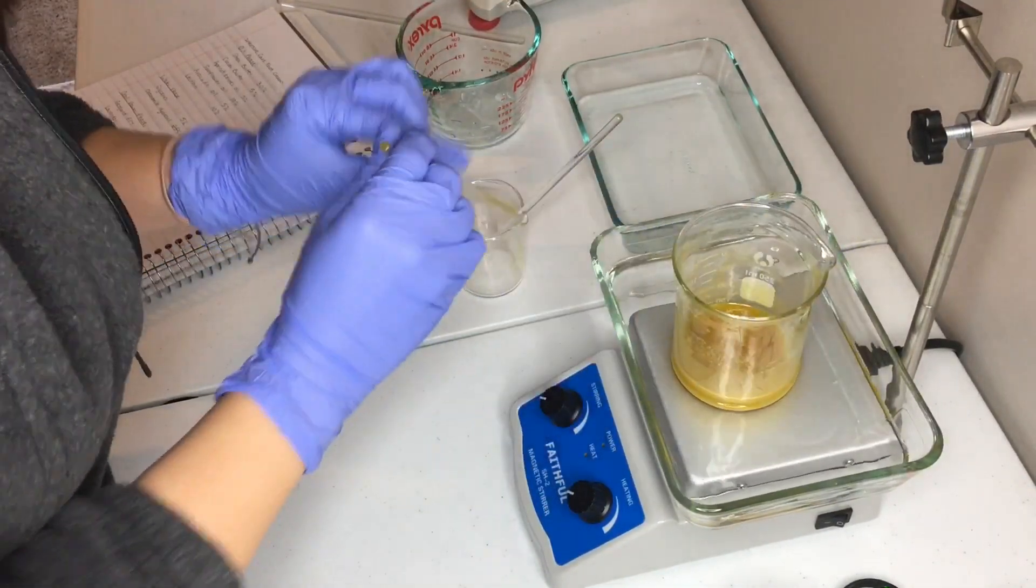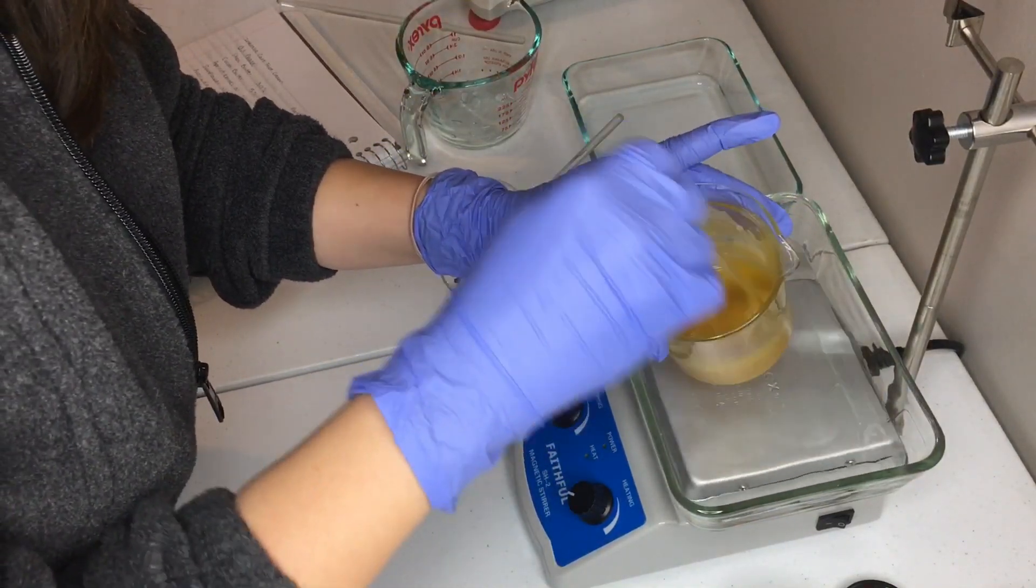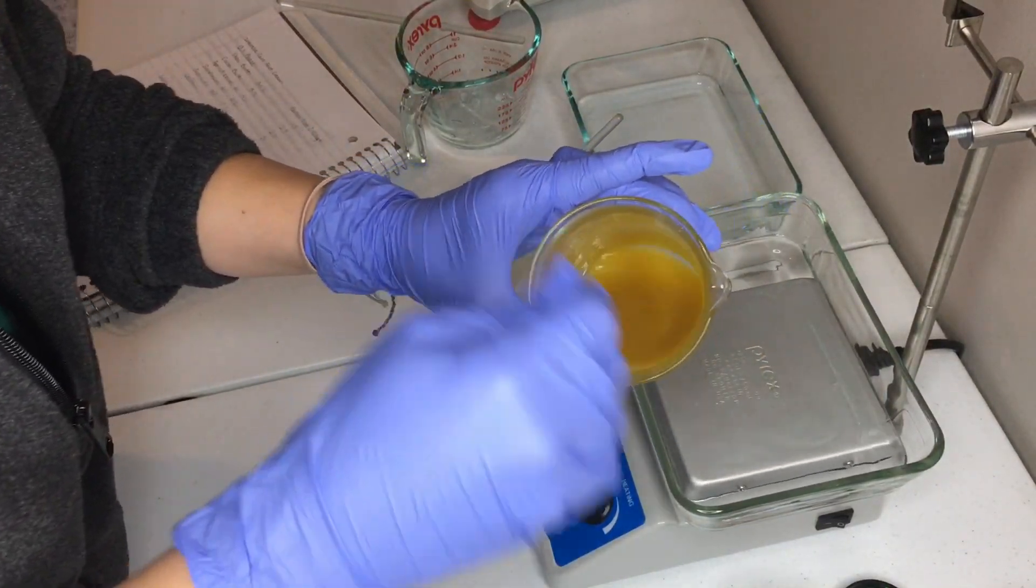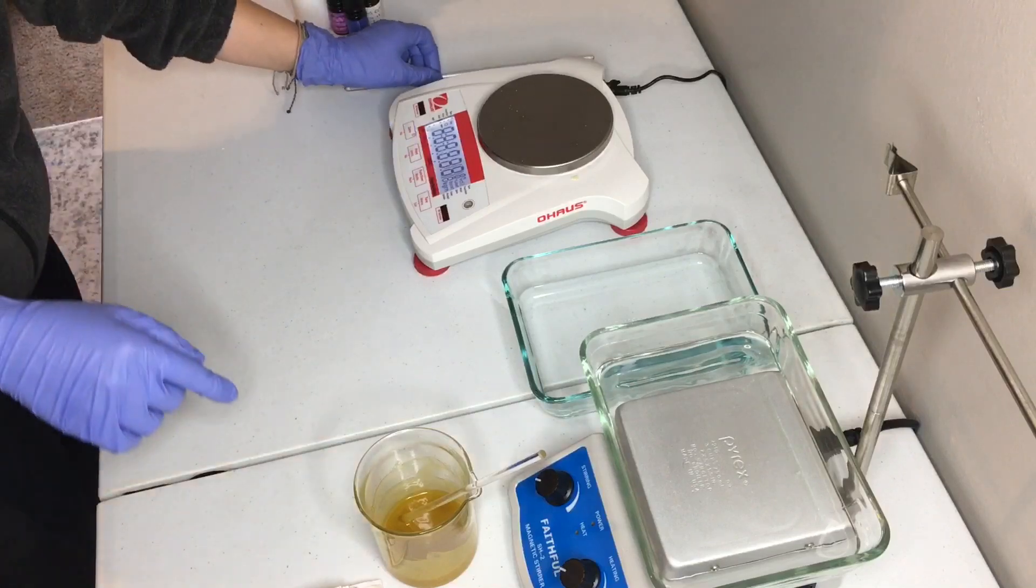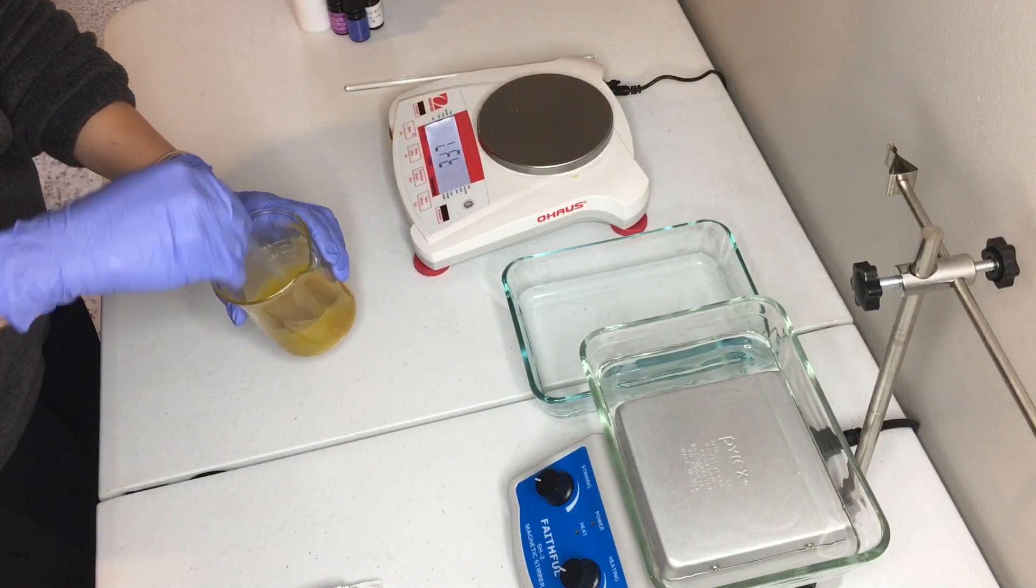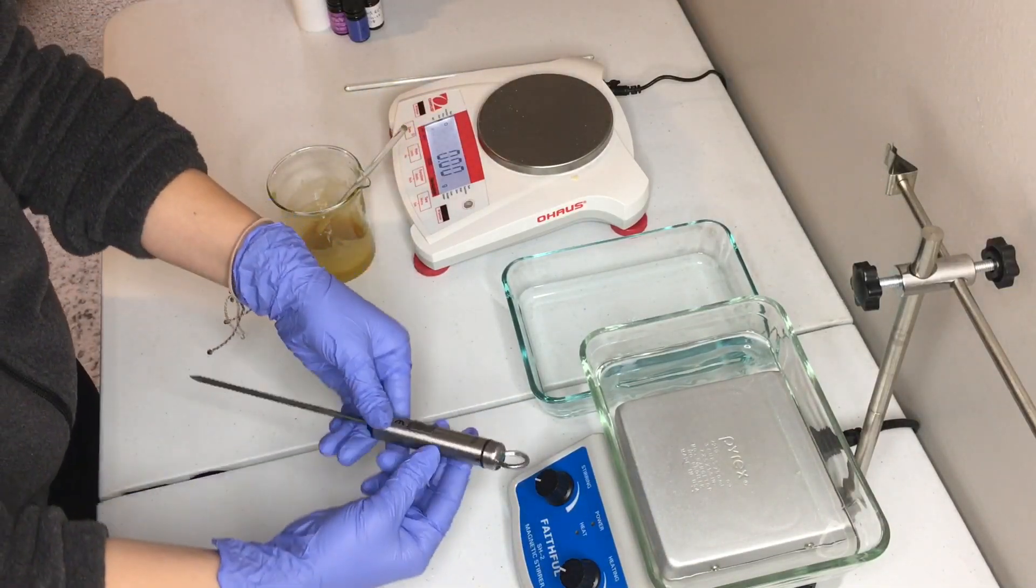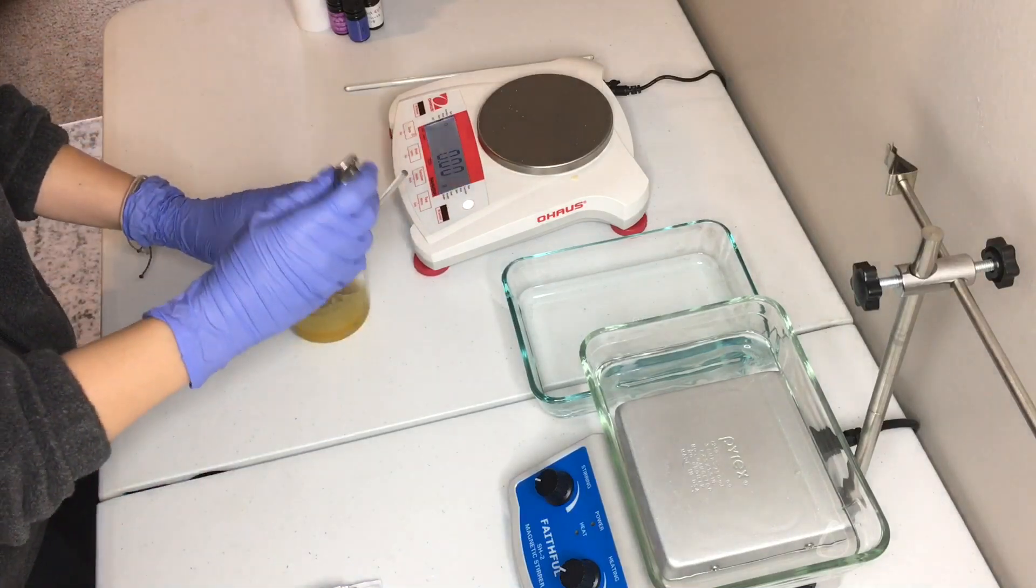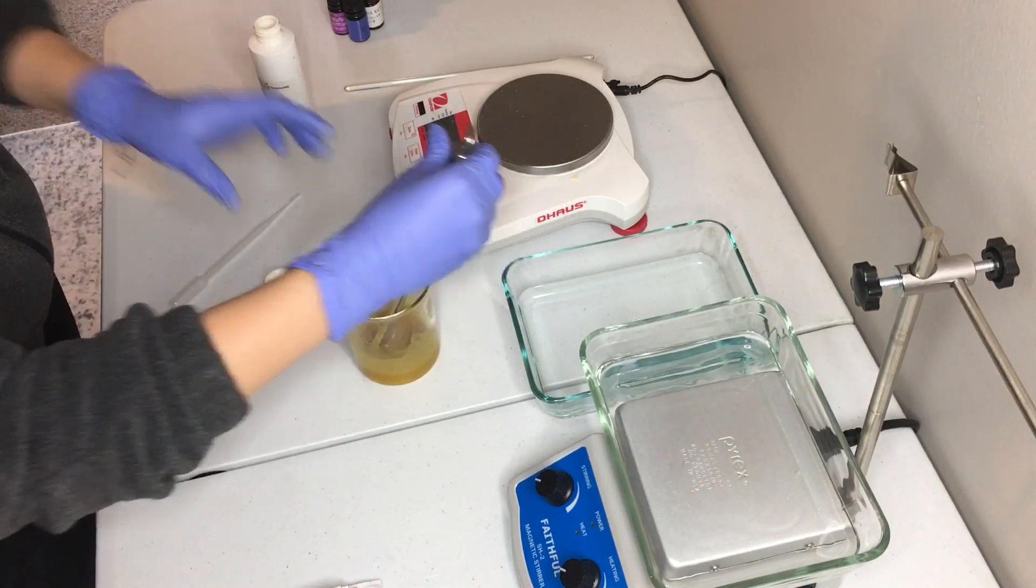So once the emulsion starts cooling down, it gets thicker and the color gets lighter. So now I'm going to set up my scale so I can add the cool down phase. But first I'm going to go ahead and make sure that my emulsion is under 40 degrees Celsius.